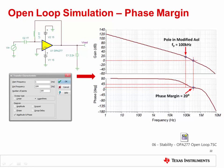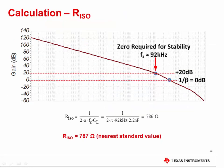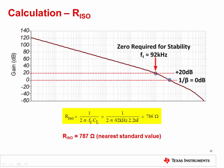To determine the value of isolation resistor RISO, we must first know the open loop AC response of the circuit. Here we show the TINA-TI simulation schematic and AC response results, which you can verify using the embedded file. To measure the phase margin, find the frequency where the gain measures 0 dB, then measure the phase at that same frequency, which in this example is 20 degrees. For best results, RISO should create a zero in the loop response 20 dB greater than the frequency where the open loop gain intersects with the closed loop gain. This circuit is a buffer with a closed loop gain of 0 dB, so the zero should occur at 20 dB. The open loop gain is equal to 20 dB at 92 kilohertz. Use this value and the load capacitance to calculate RISO, which is 786 ohms in this example. 787 ohms is the nearest standard value resistor.